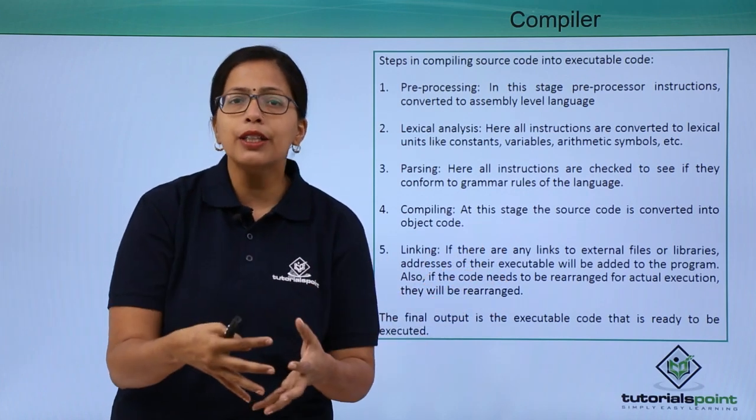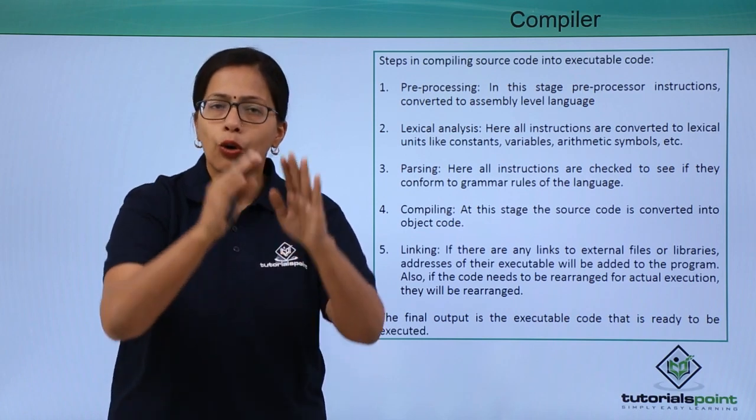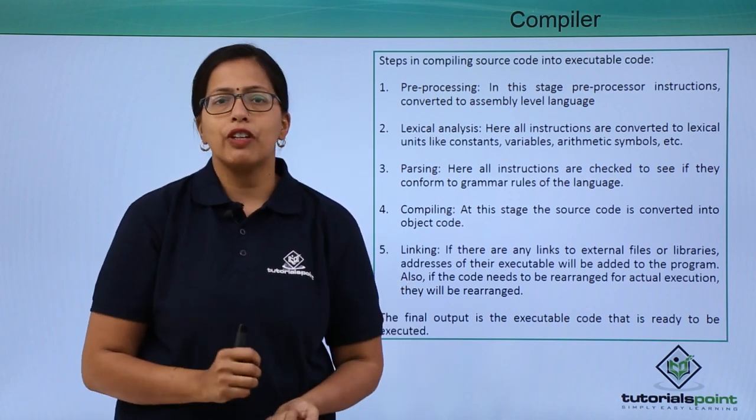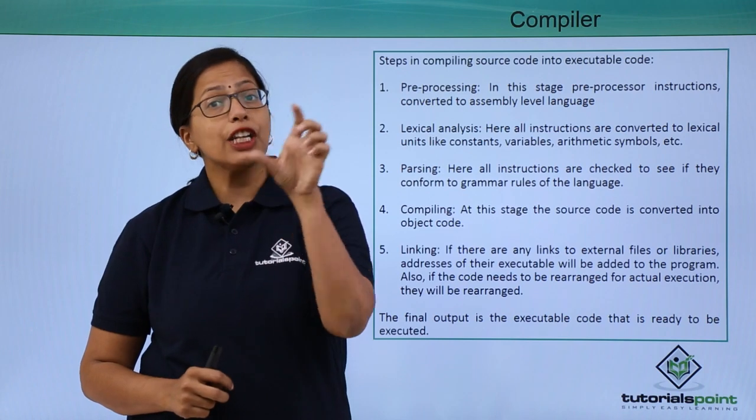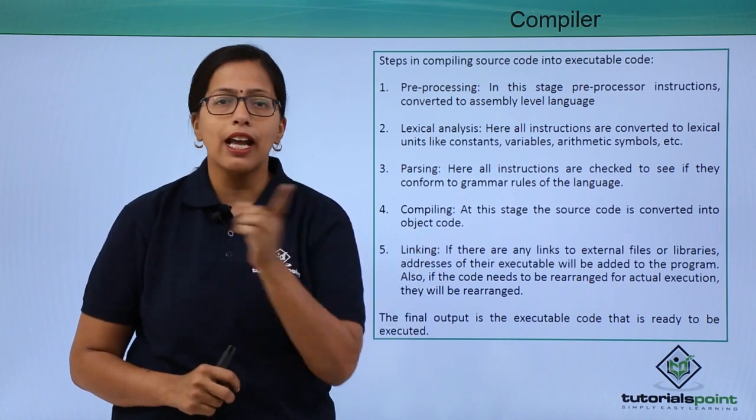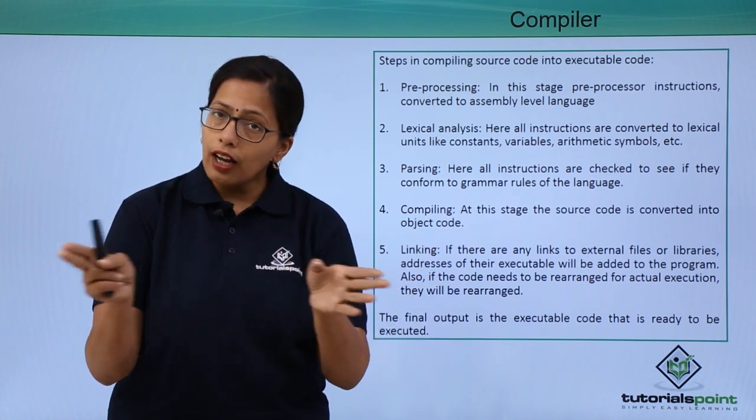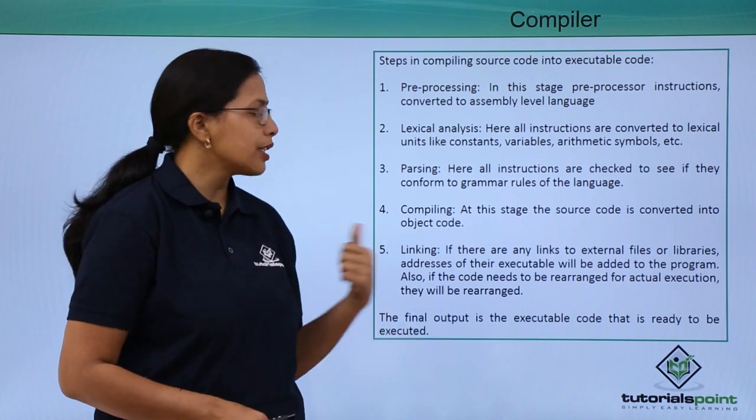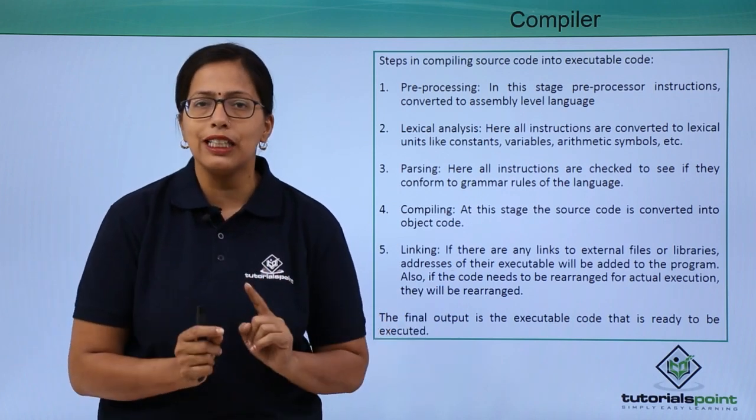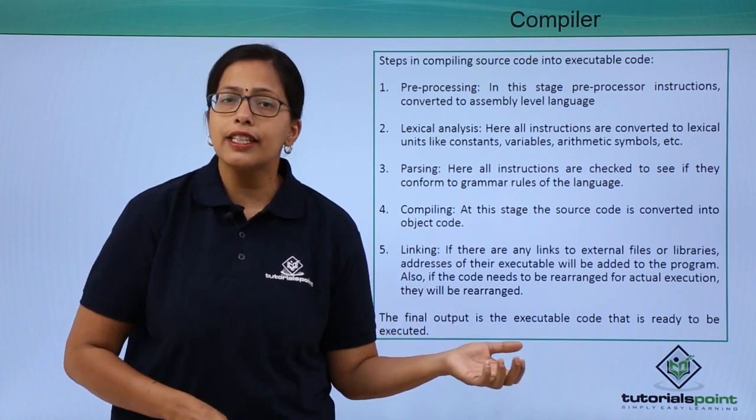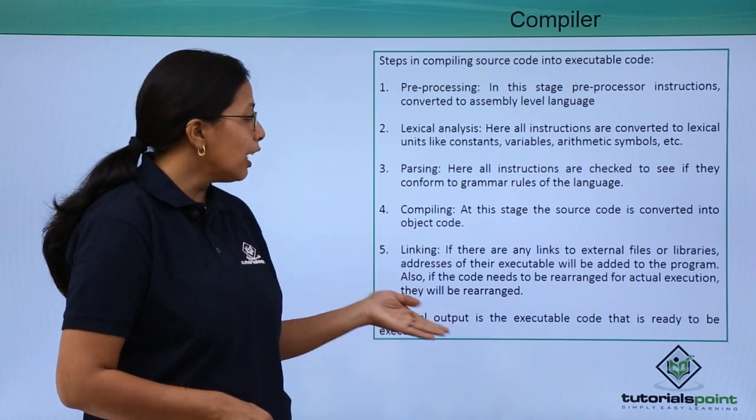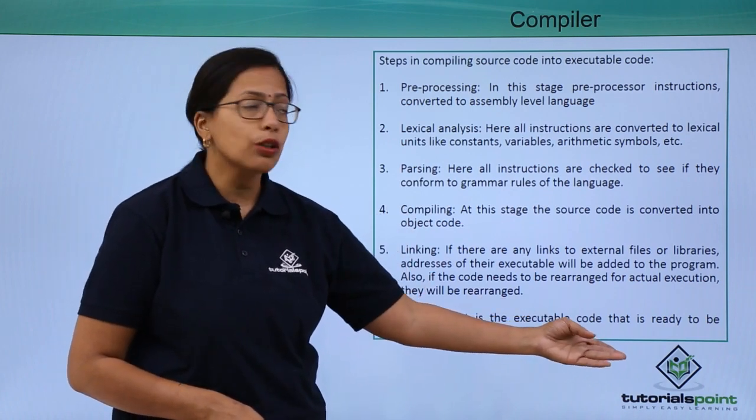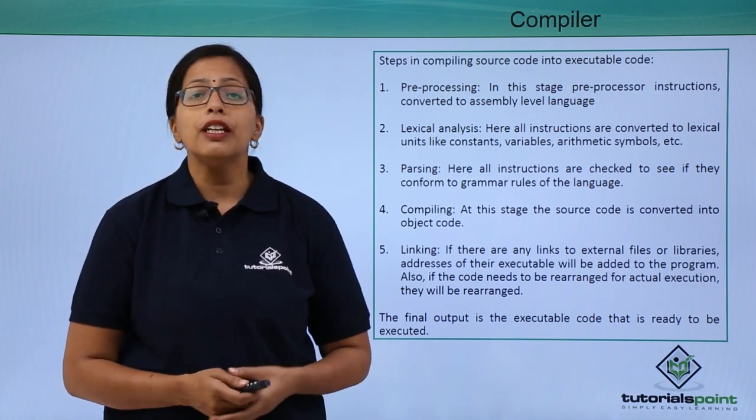So each individual program when it is compiled has to be linked with the other programs. This happens in the linking phase. And once they all are linked with each other, we get the executable code. The final output is the executable code that is ready to be executed.